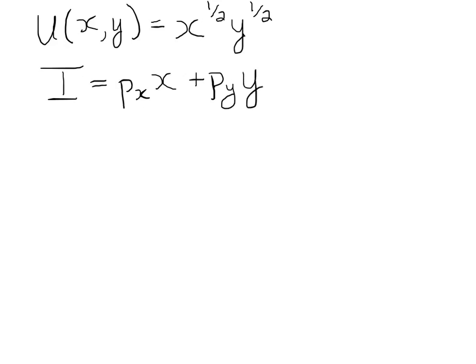To form the Lagrangian optimization, we're going to insert some numbers to make our example easier, but of course you could do this with any utility function and any budget constraint. In this case, let's set our income equal to 100, our price of good x equal to 5, and our price of good y equal to 10.